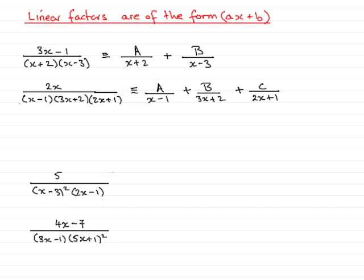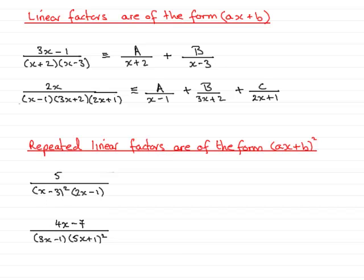And when you have a repeated linear factor, that is something of the form ax plus b all squared, you always get a partial fraction or partial fractions of the form of a constant over ax plus b, plus another constant over ax plus b all squared. So I'll show you how that works out here.